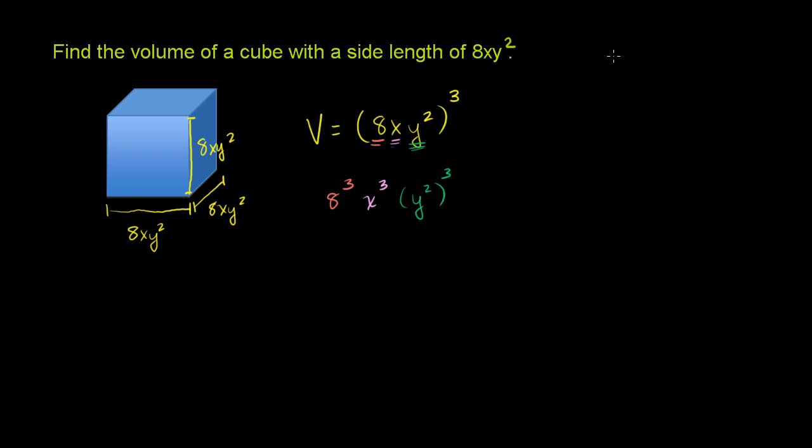And what's 8 to the third power? That's the same thing as 8 squared is 64, so we'll multiply 64 times 8. 4 times 8 is 32, 6 times 8 is 48, plus 3 is 51, so it's 512. So this is equal to 512 times x to the third,